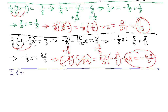Our next example: we have (2x plus 4) divided by 8, and this equals 9. We want to get x to one side and everything else to the other. We can simplify — all three terms in the fraction on the left side have a factor of 2, so we can pull that out. Dividing each term by 2: 2x becomes x, 4 becomes 2, and 8 becomes 4. So this becomes (x plus 2) divided by 4 equals 9.